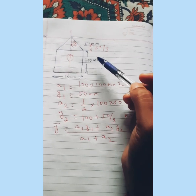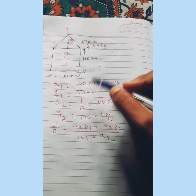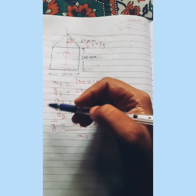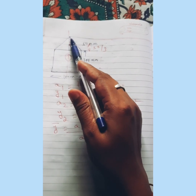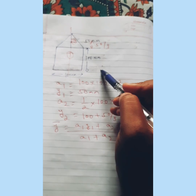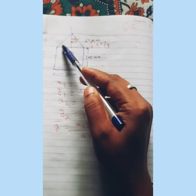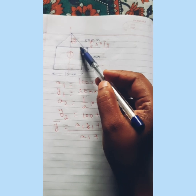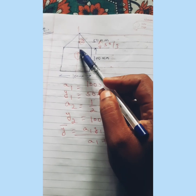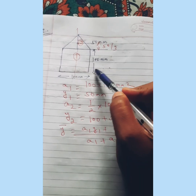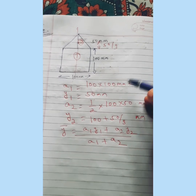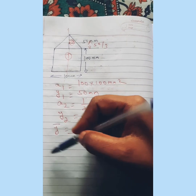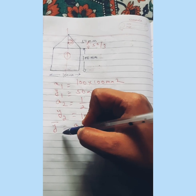The area of the triangular section is: A2 = ½ × base × height = ½ × 100 × 50 = 2500 mm². For the triangular cross section, the center of gravity lies at h/3 from the base, which is 50/3 mm from the base of the triangle. Since we reference from the bottom surface, y2 = 100 + 50/3 mm. We substitute all values into the formula to find the y-coordinate of the center of gravity.